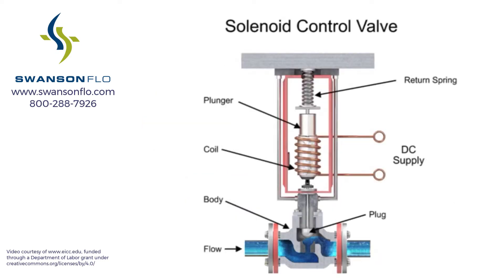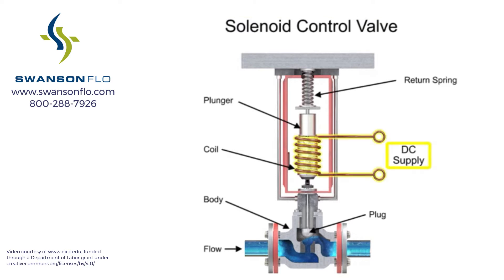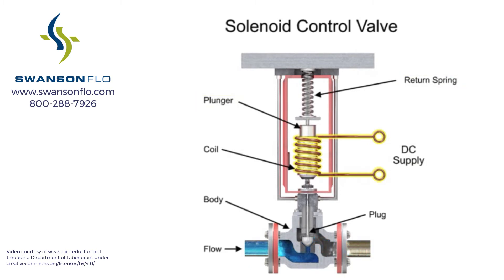For on-off control of the valve, a solenoid is used to actuate the valve to a fully closed or fully open position. Applying current to the coil generates a magnetic field that moves the plunger downward against the return spring. With zero current applied to the coil, the spring pulls the plunger upwards to the fully open position for a normally open state control valve.